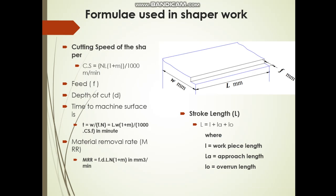There are some formulas we need to know: cutting speed, time for cutting, material removal rate, and stroke length. For cutting speed, the formula is: cutting speed = N × L × (1 + M) / 1000, with units of meters per minute, where N is the number of strokes, L is the stroke length, and M is the ratio of return time to cutting time.